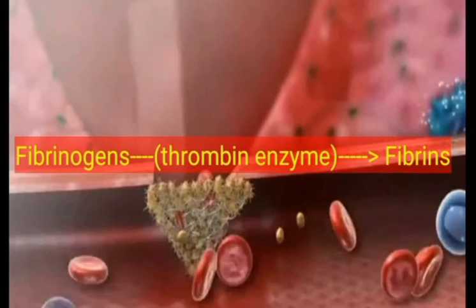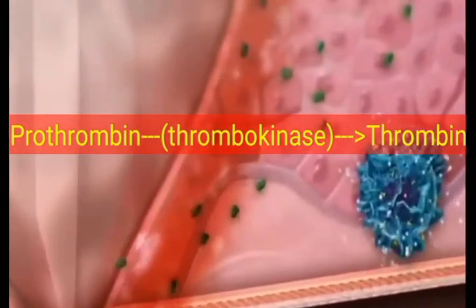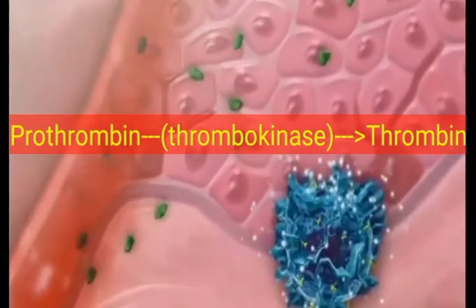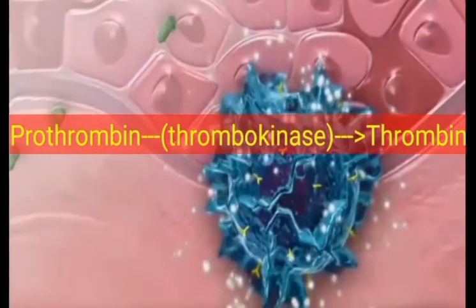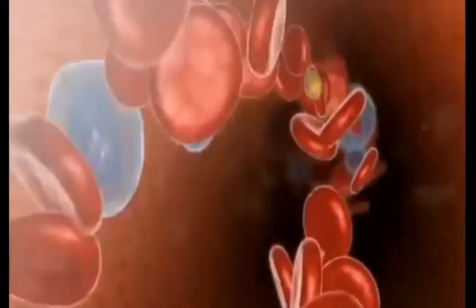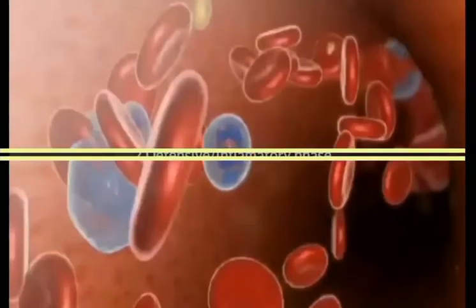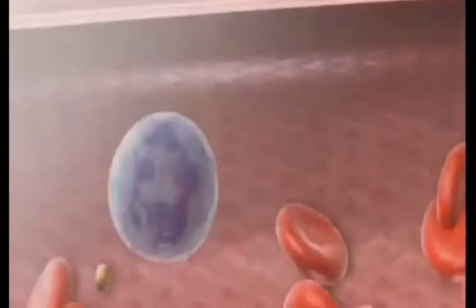The enzyme thrombin is produced from prothrombin in the presence of another enzyme known as thrombokinase. After the formation of fibrin, that fibrin forms the coagulum, which covers the injured part and stops the bleeding. Its main function is to stop the bleeding caused by the injury. After the end of the first stage, it moves to the second stage, which is the defensive stage.